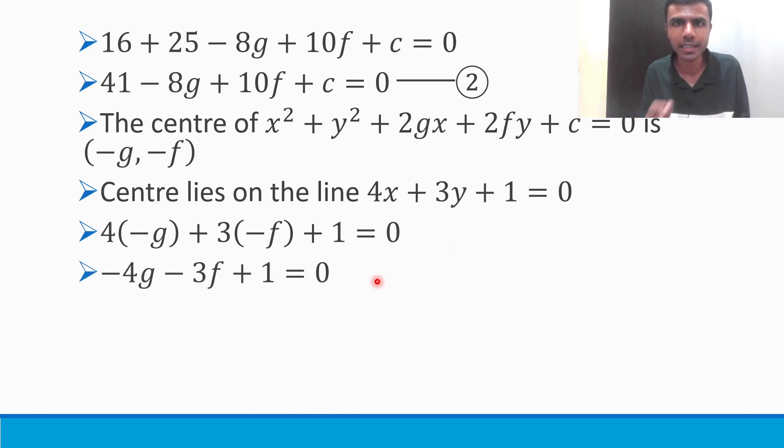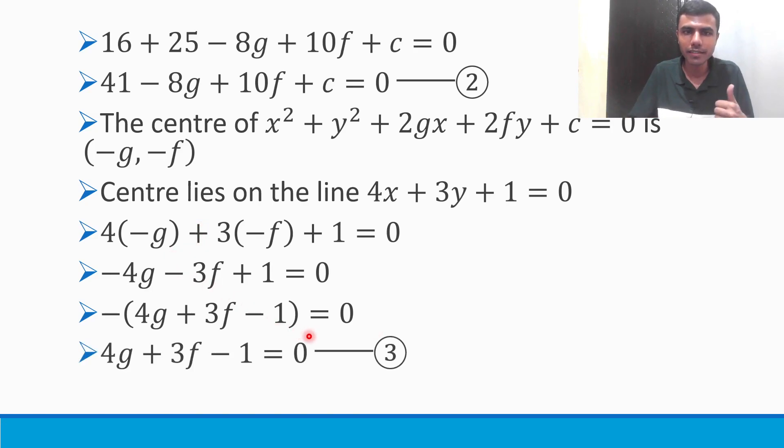If you see, there are so many negatives in this. Let us make them positive. How? Just take minus common. If we take minus common, then I get 4g + 3f. Since it is positive, since I took minus common, it becomes minus. Now send this minus here, 0 by -1 is 0. So ultimately, I get 4g + 3f - 1 = 0. Mark it as equation 3. Now this is one equation without c.